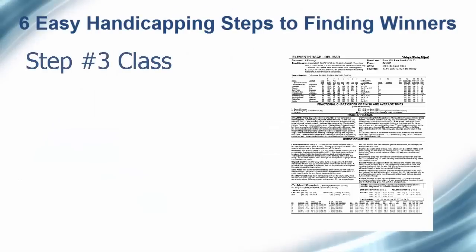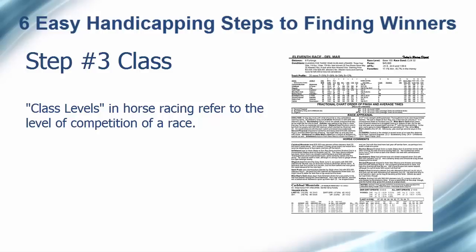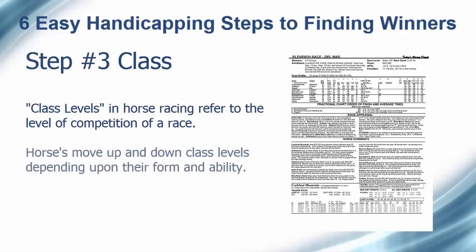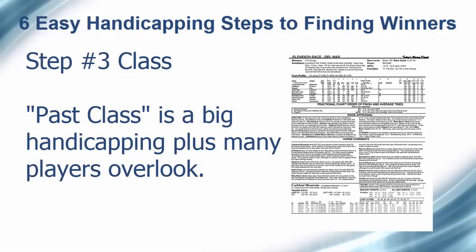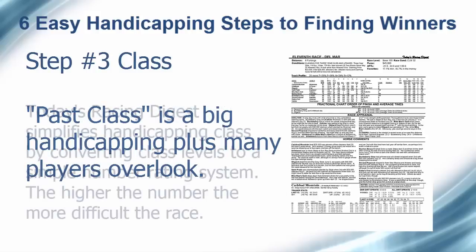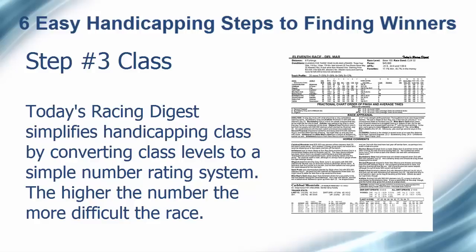The next step, handicapping class, is a tricky part of the puzzle since horses can improve and regress quickly. Often outclassed horses will be eliminated in Step 2, but in the case of horses stepping up in class off an impressive effort, it's necessary to analyze how those figures were earned. Past class is a big handicapping plus and is often overlooked by many players. The Race Sheets makes handicapping class easy by converting the class levels to a simple number system which allows you to easily compare the quality of one class of horses from another.